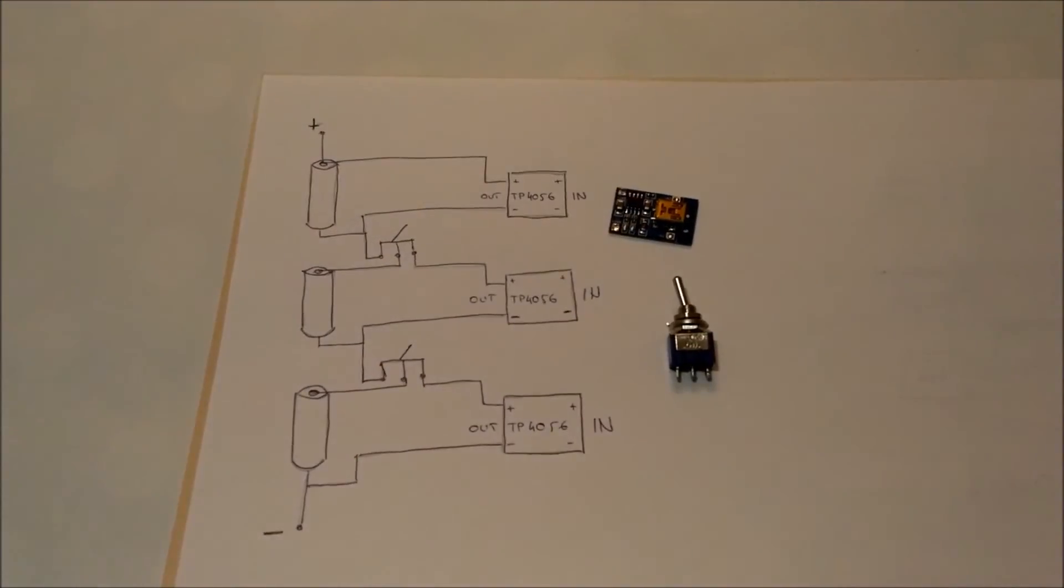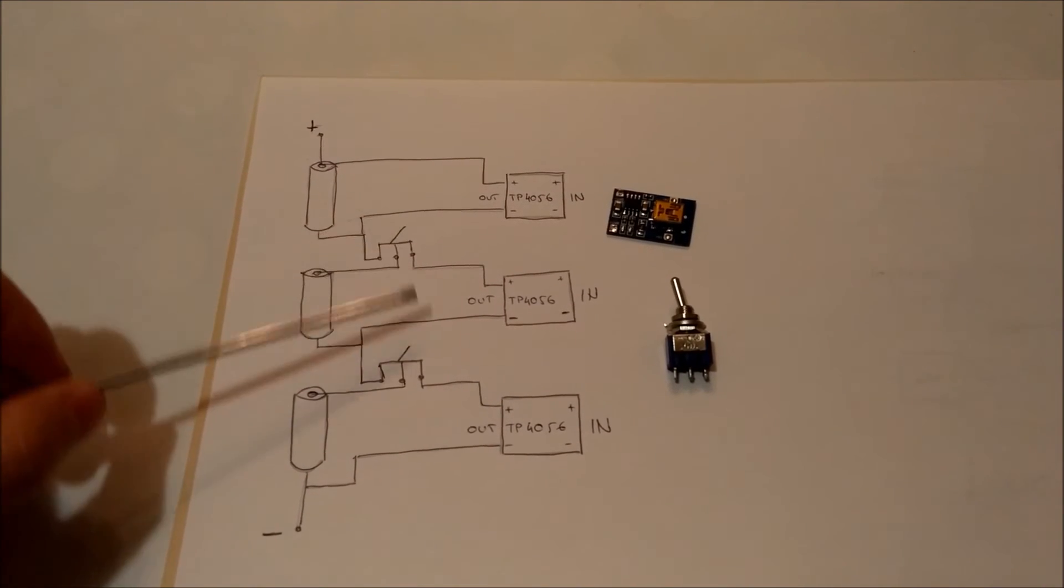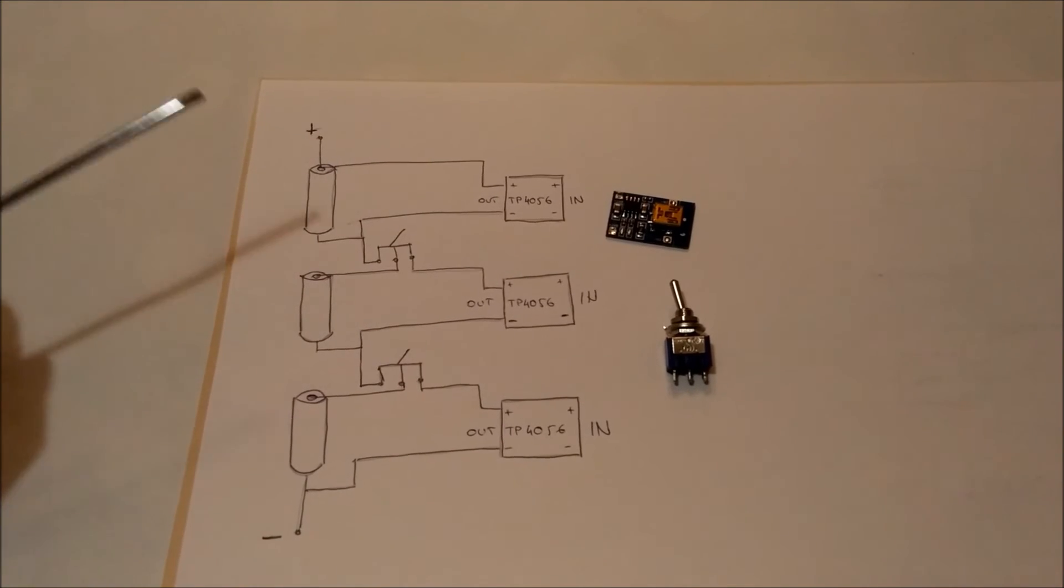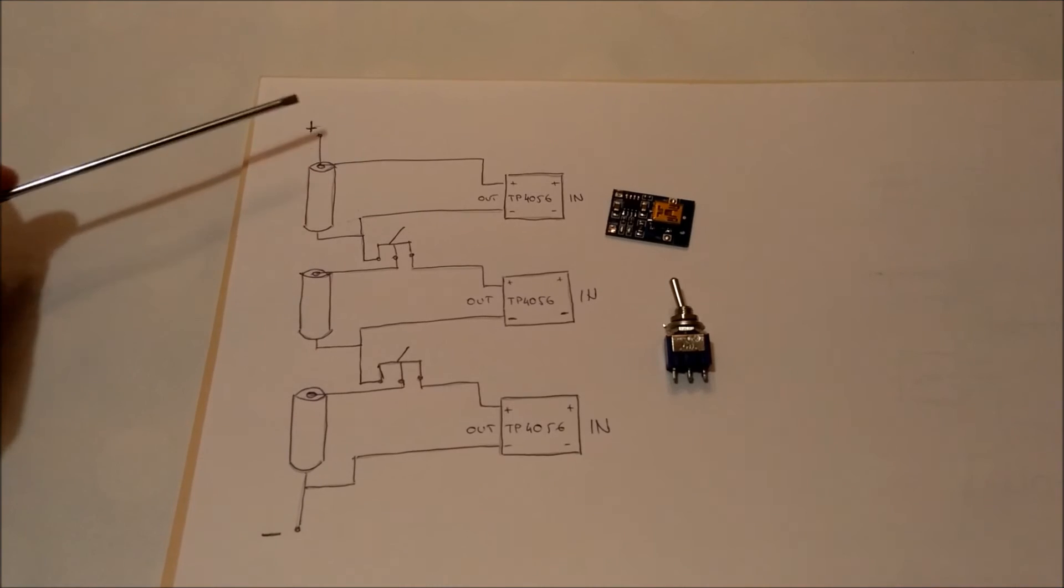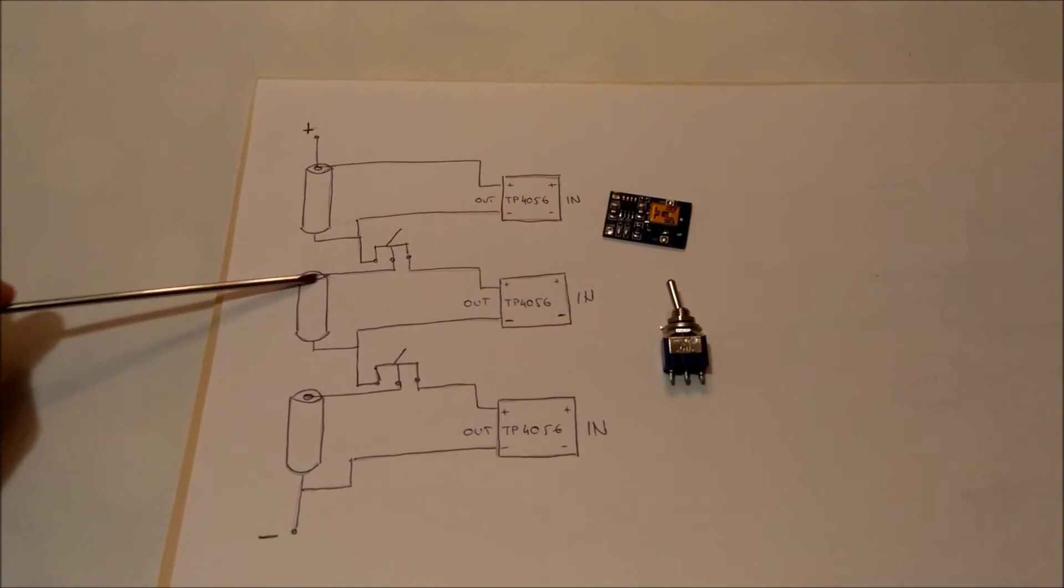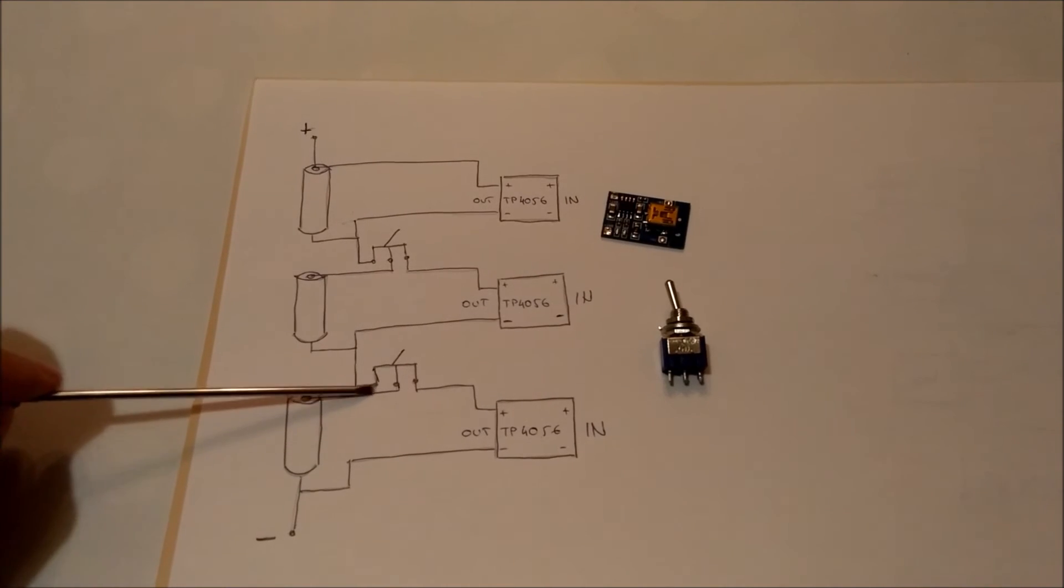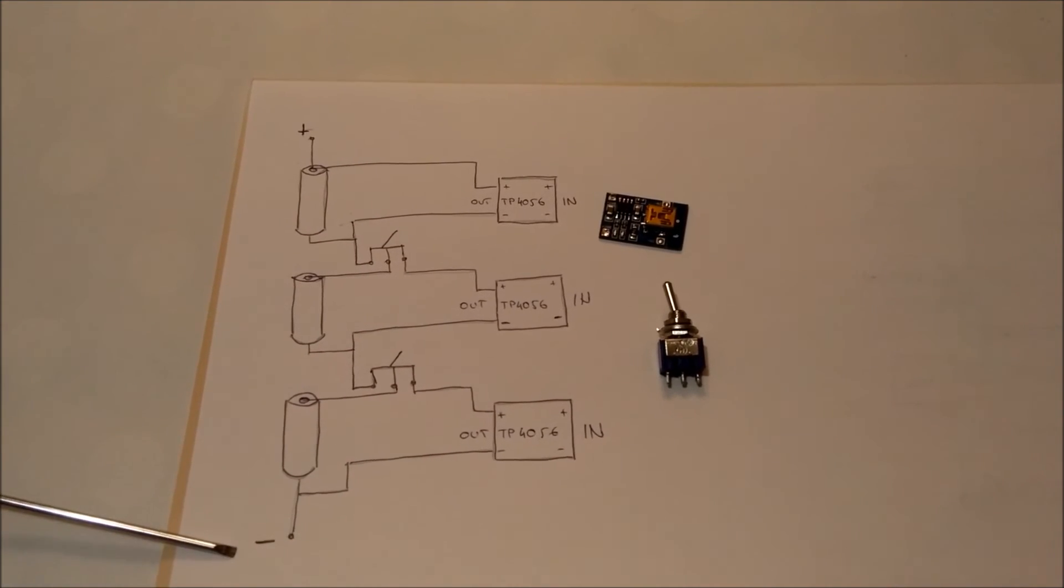So here, if we imagine that this is the state of the switches, we will see that we have a circuit through all three batteries and we have big potential here.